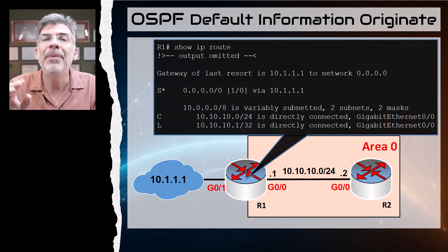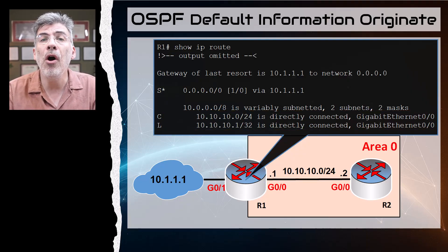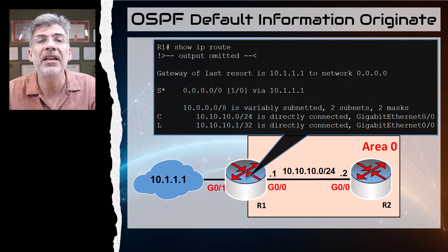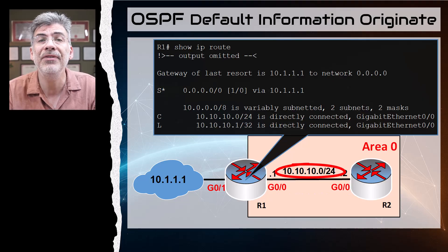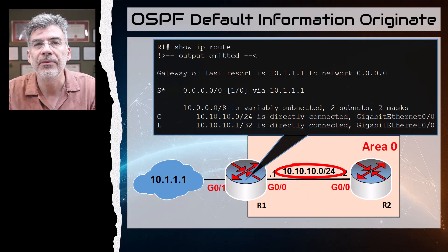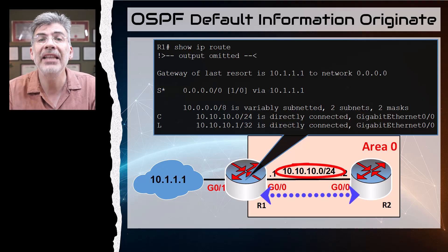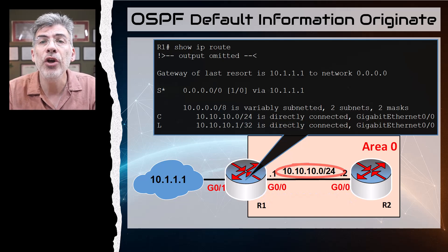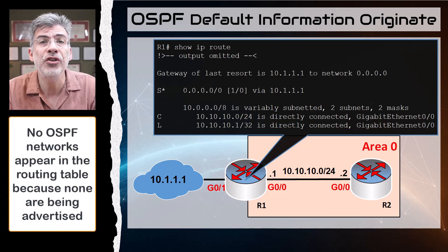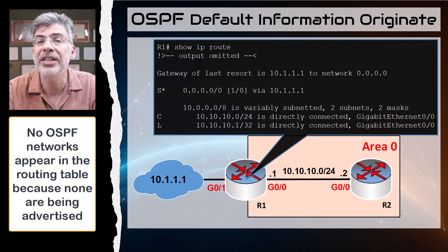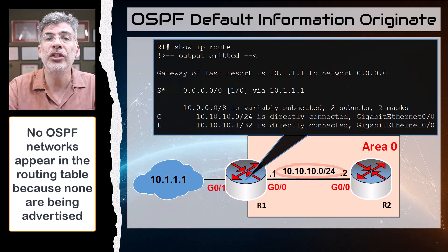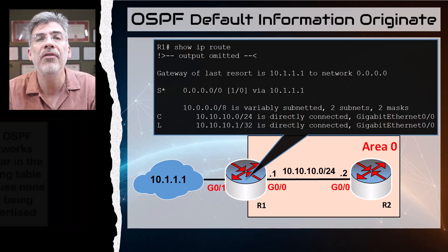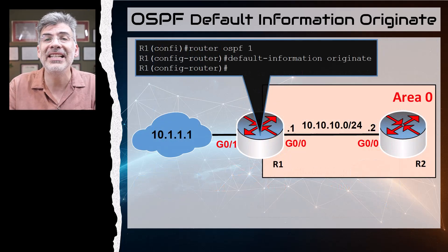We've already configured OSPF on both routers such that this network is participating in OSPF, making both routers actively search for OSPF neighbors across this link. We assume they've found each other and are OSPF neighbors at this point. No networks are being advertised because no networks have been added using the network command other than this directly connected network — that's why we don't see any other OSPF routes in the routing table of R1.